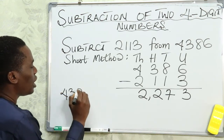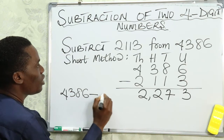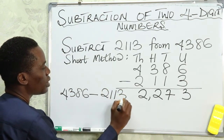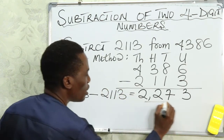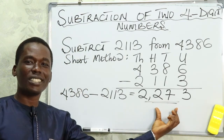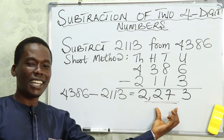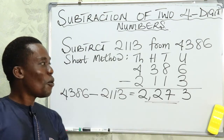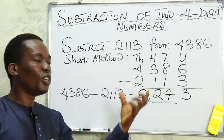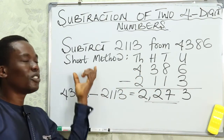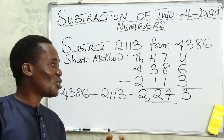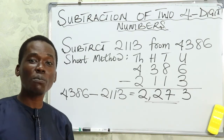So 4386 minus 2113 equals 2273. Isn't that easy? Whichever method is easier for you, go ahead and master it to solve subtraction of four-digit numbers.